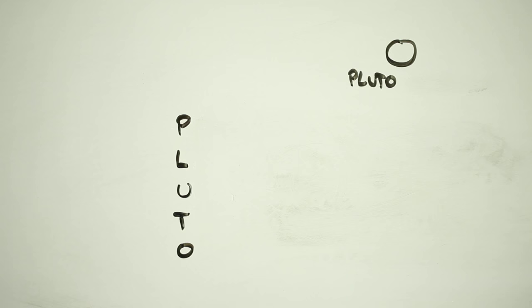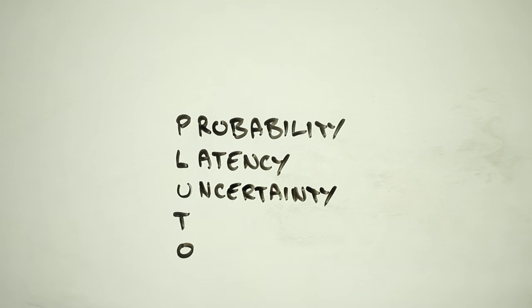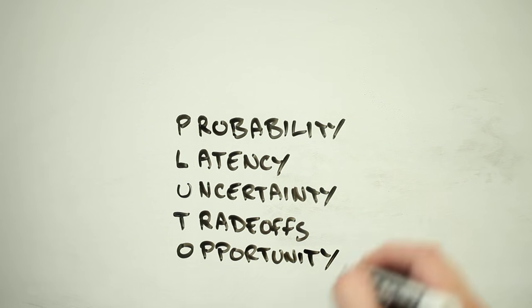So remember, while you're watching images of Pluto streaming back to Earth, they're only possible because of another Pluto: probability, latency, uncertainty, trade-offs, and opportunity.